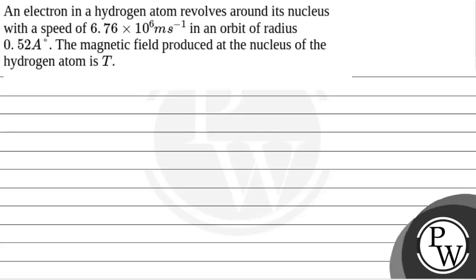Let's read the question. The question says that an electron in a hydrogen atom revolves around its nucleus with a speed of 6.76 times 10 to the power 6 meters per second